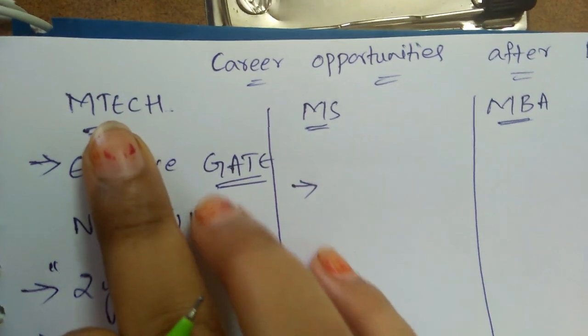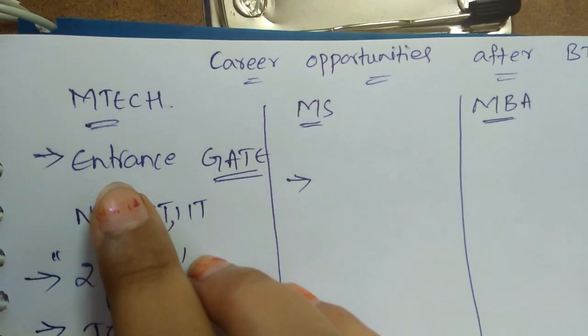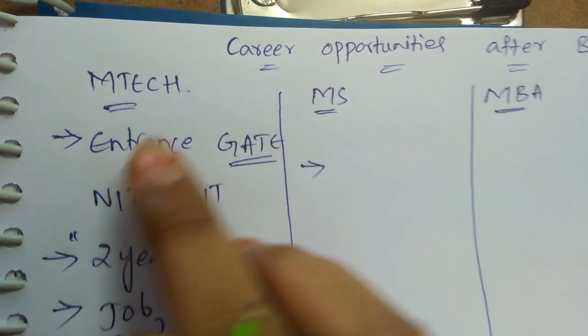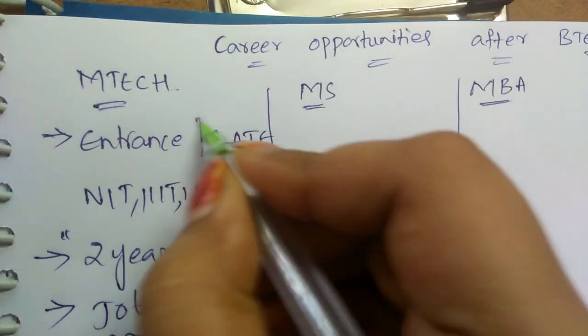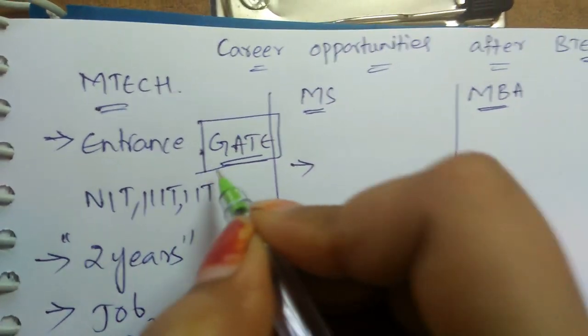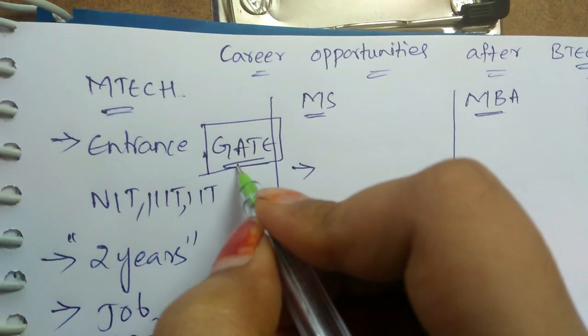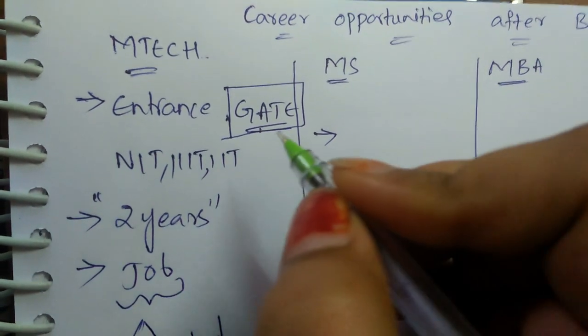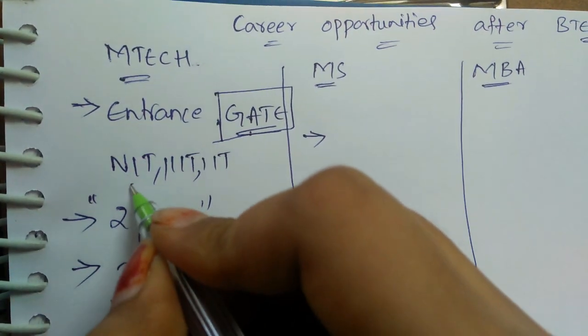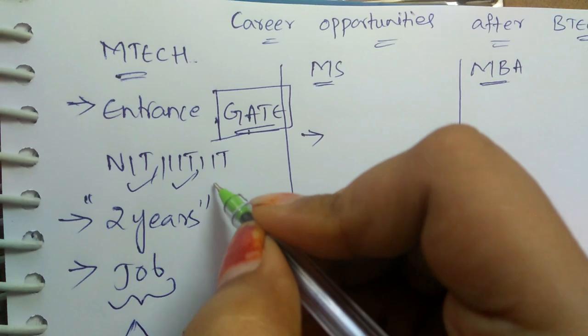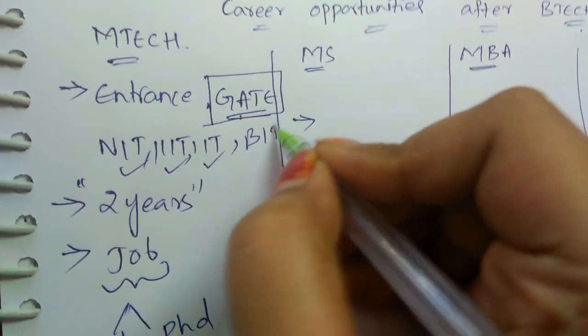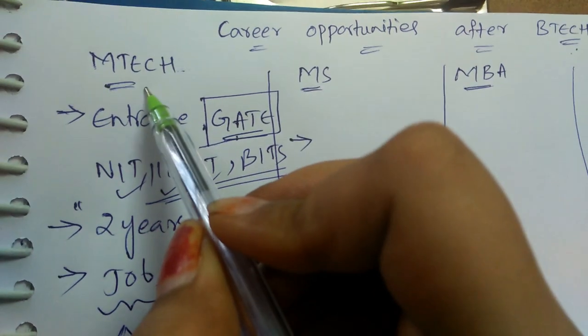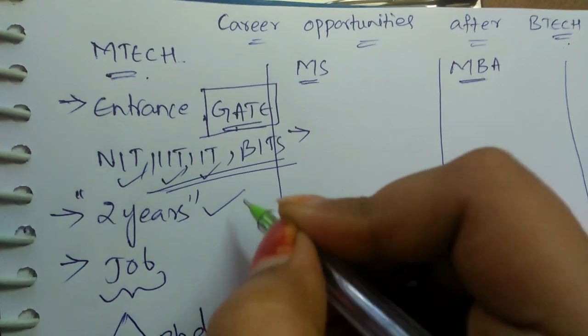Now let's begin the video. If you go to MTech, then you need to write an entrance exam which is called GATE. If you get a good rank in GATE then you can get admission or you can get seat in NIT, triple IT, IIT, or BITs like topmost colleges or universities. MTech is of two years course.